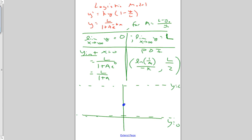The y-intercept is going to be at the point L over 1 plus A. And we're going to have a point of inflection at the point ln of 1 over A over negative k, and L over 2.